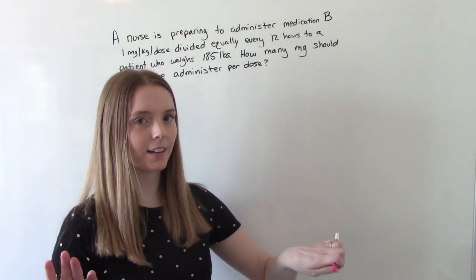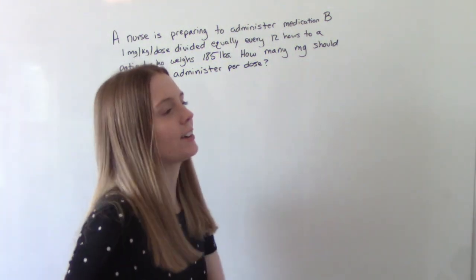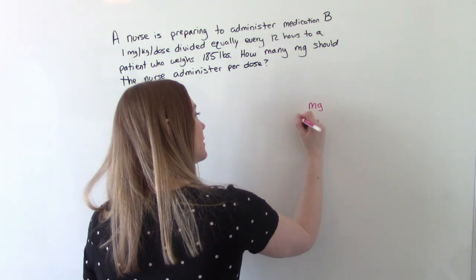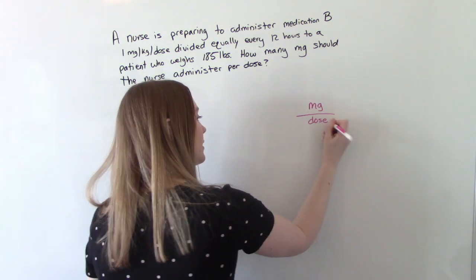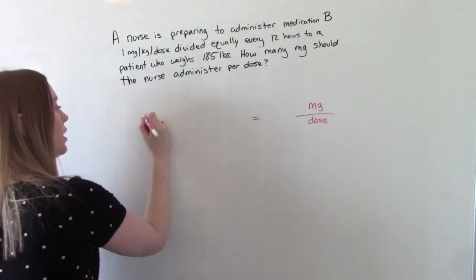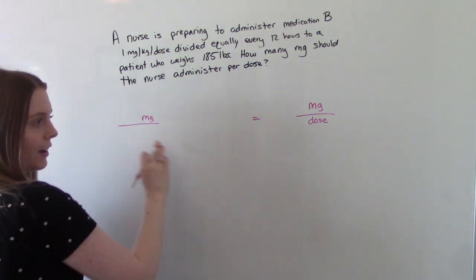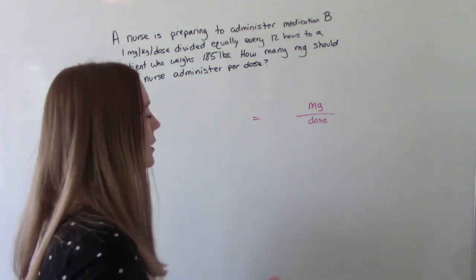So pause. Let's start. So we're looking for milligrams per dose in our answer. So we'll need to have milligrams on our numerator on our top, and eventually we'll have dose on the bottom.